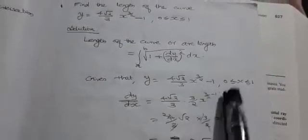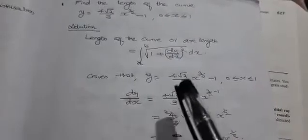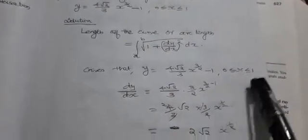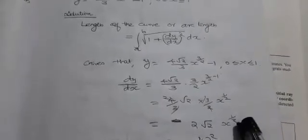The arc length equation is L = ∫ from a to b of √(1 + (dy/dx)²) dx. Here y = (4√2 / 3) · x^(3/2) − 1. Computing dy/dx: differentiating x^(3/2) using the power rule x^n → n·x^(n−1), we get (3/2)·x^(1/2), so dy/dx = (4√2/3) · (3/2) · x^(1/2) = 2√2 · x^(1/2).